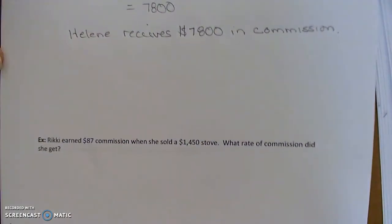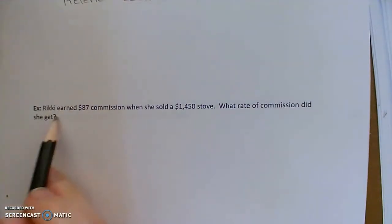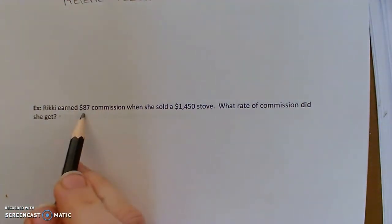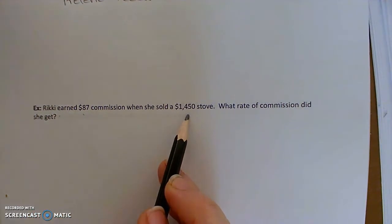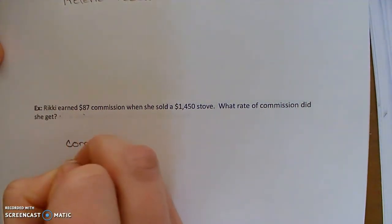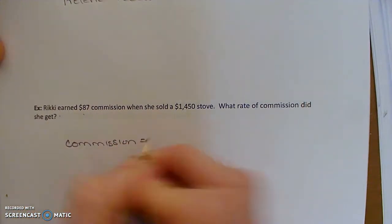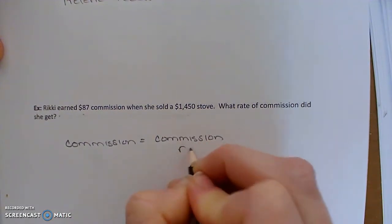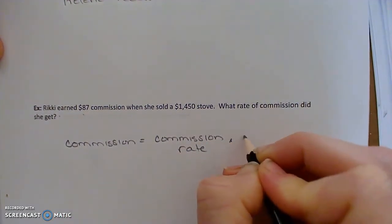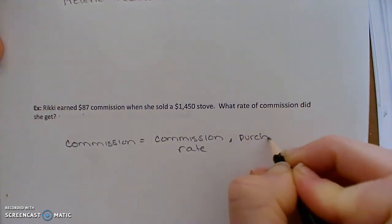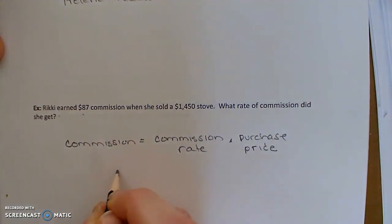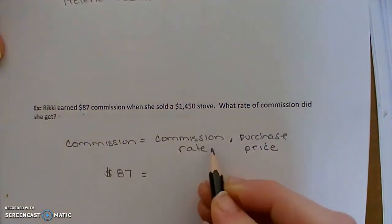Now let's do another problem where we find the commission rate if we know what the commission is and we know what the purchase price is. The formula is: commission equals the commission rate times the purchase price, or the total sale.